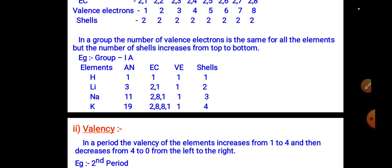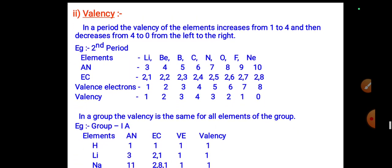Electronic configurations: helium is 1; lithium is 2,1; sodium is 2,8,1; potassium is 2,8,8,1. The valence electrons for all these elements is one. The number of shells increases from 1 to 4 going down the group.